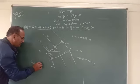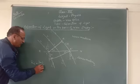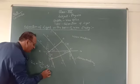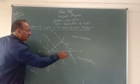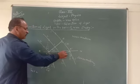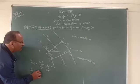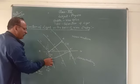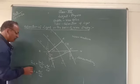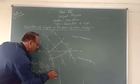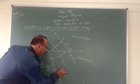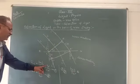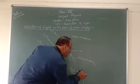For the second law, sin i from this right-angle triangle equals the perpendicular upon the hypotenuse, that is AA' upon BA'. Similarly, sin r from this right-angle triangle equals the perpendicular upon hypotenuse, that is BB' upon BA'. Dividing sin i by sin r, BA' cancels with BA', giving AA' upon BB'.